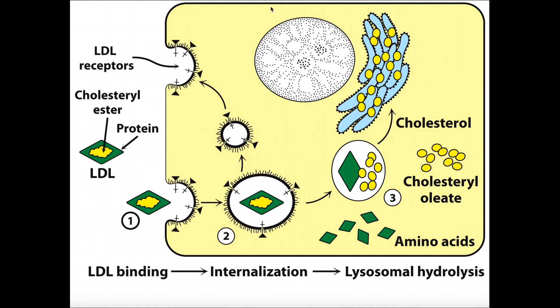Let's consider a cell — it could be a skeletal muscle cell or any cell. Suppose it has low cholesterol in its membrane and needs more. This is a very tightly regulated process. Whenever a cell is depleted of cholesterol, it will start to display LDL receptors in its membrane. The lower the cholesterol content of the cell, the more of these receptors there will be — it's a type of negative feedback.